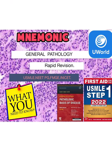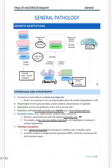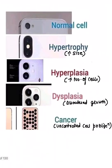Let's get started with general pathology rapid revision. First of all, what is pathology? It's basically the study of cells and other things. We have adaptation — whenever you have some stress in life, you need to adapt. Similarly, cells undergo growth adaptations.